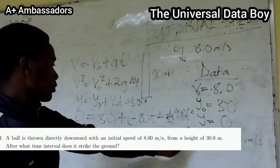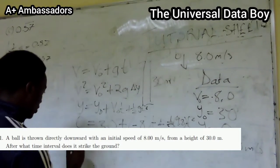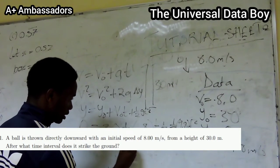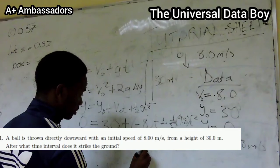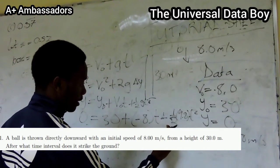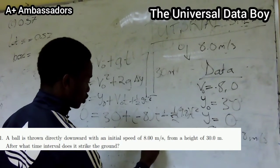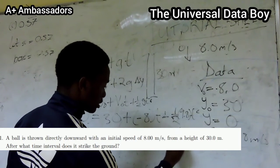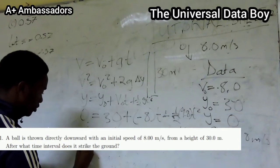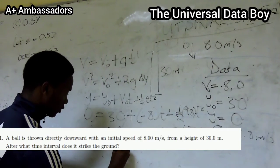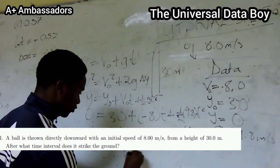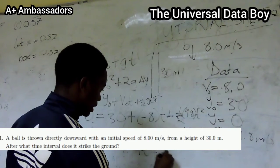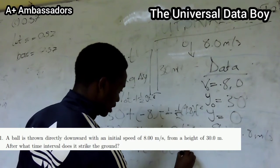This is a quadratic equation. So we're going to have 0 = 30 - 8t - 4.9t². We arrange this in order: -4.9t² - 8t + 30.